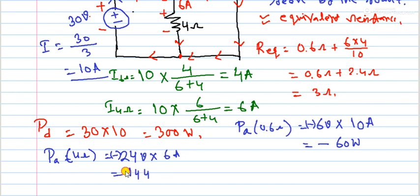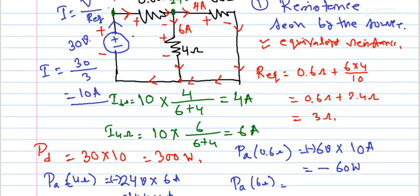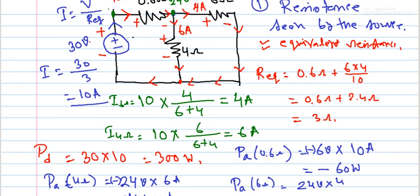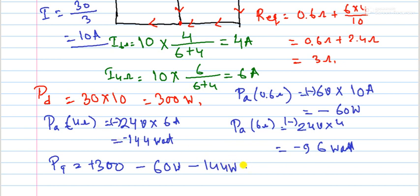That gives minus 144 watts. Power absorbed by 6 ohm: voltage across it is 24 volts, current through it is 4 amperes. Current is 4 amperes, so power is minus 96 watts.